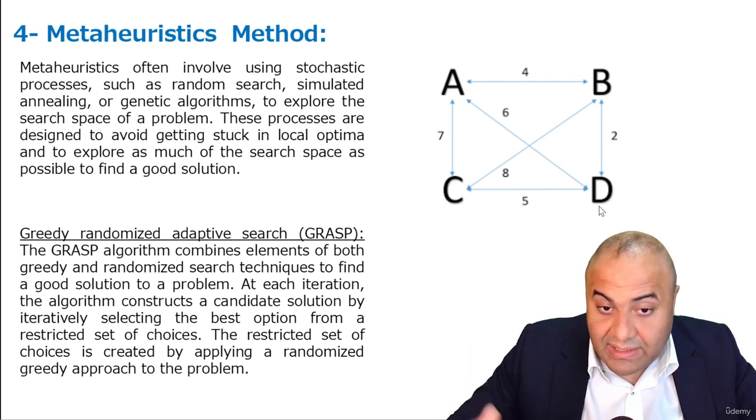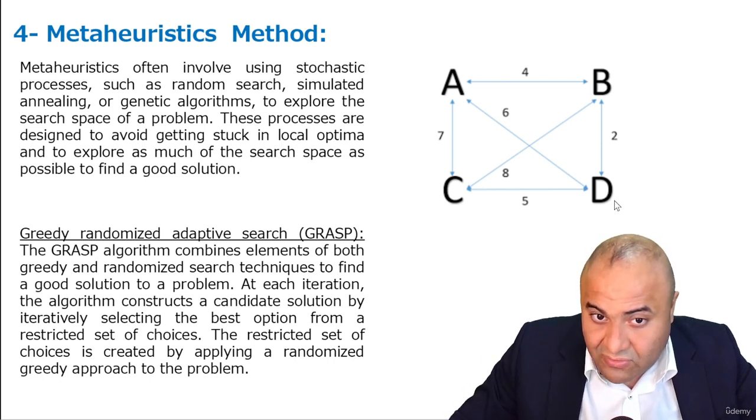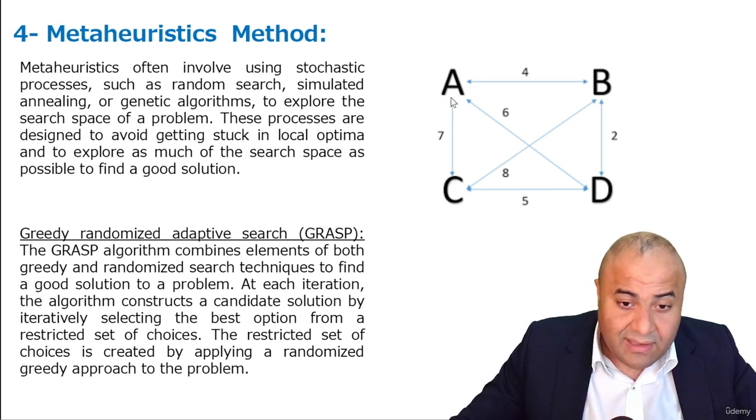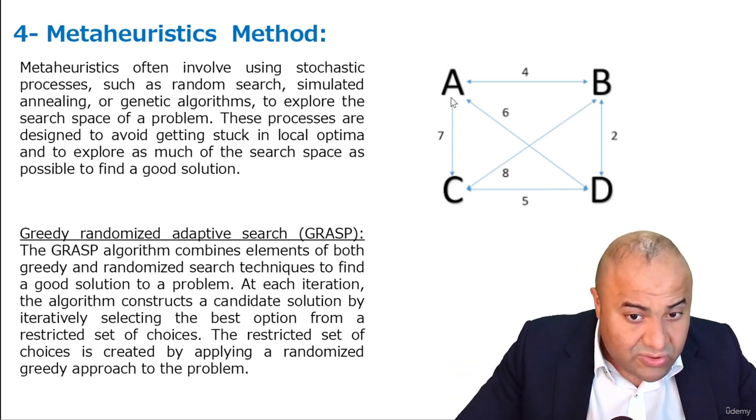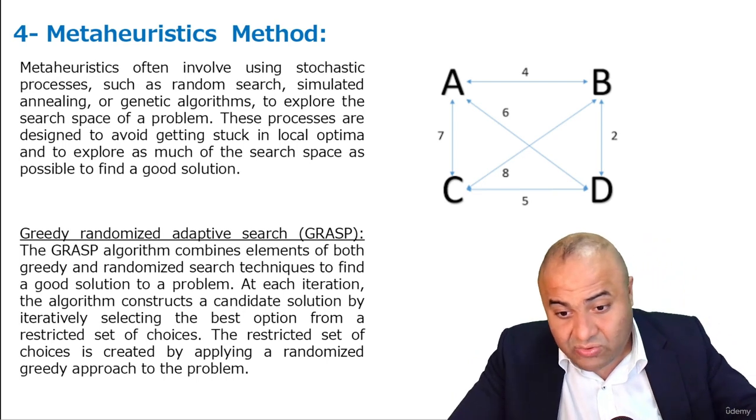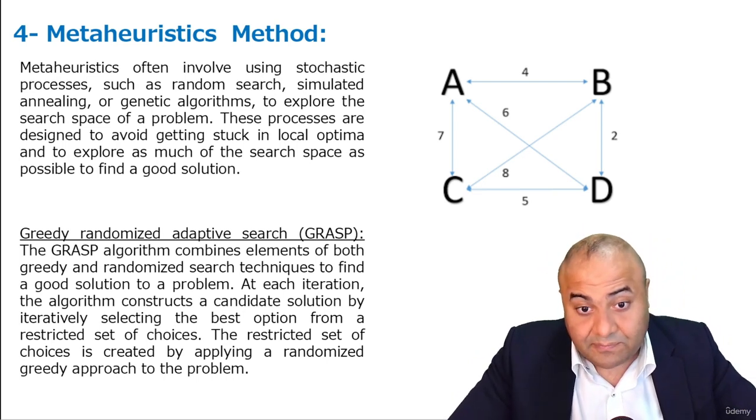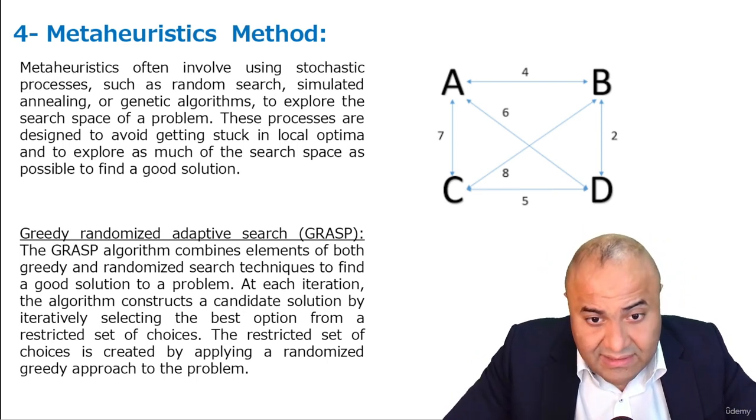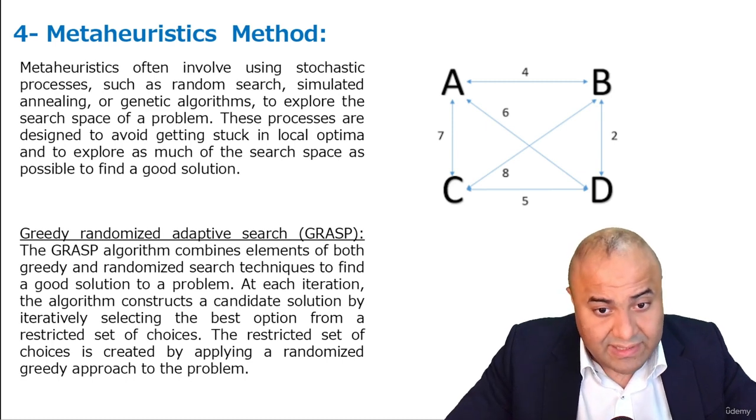And then we can go again greedy or, of course, random. But in this case, of course, D is, we already finished the cycle, so we go to A. So the idea is, sometimes we choose a greedy solution, and sometimes we choose a random solution. These are the basics of the meta-heuristic methods.